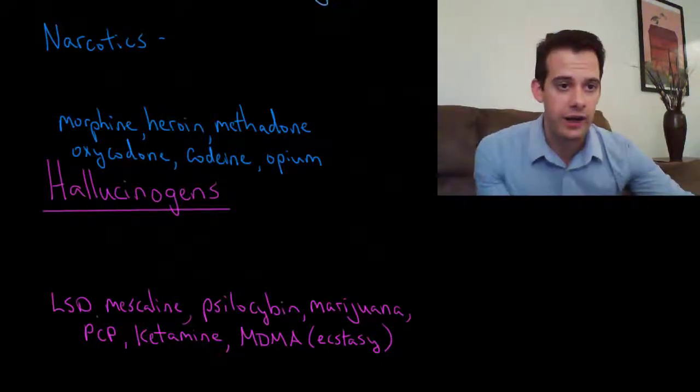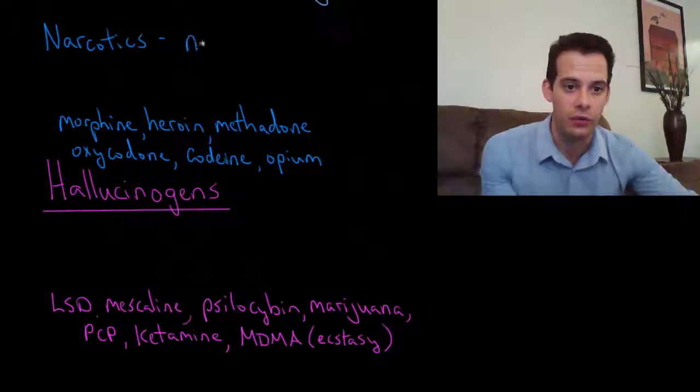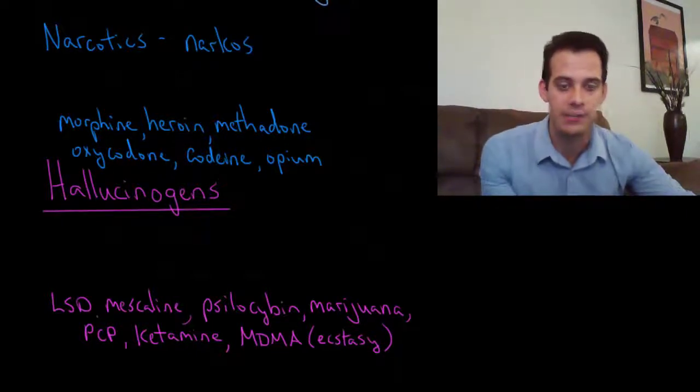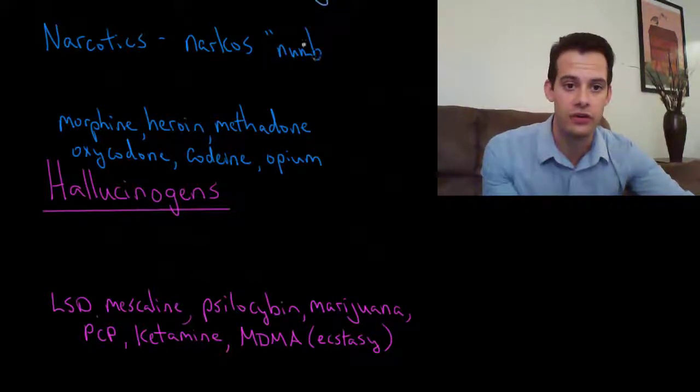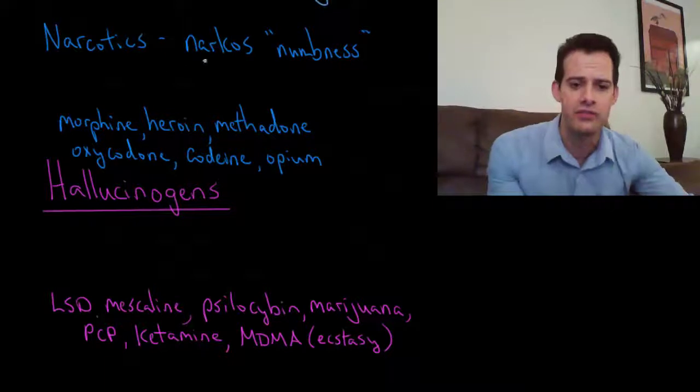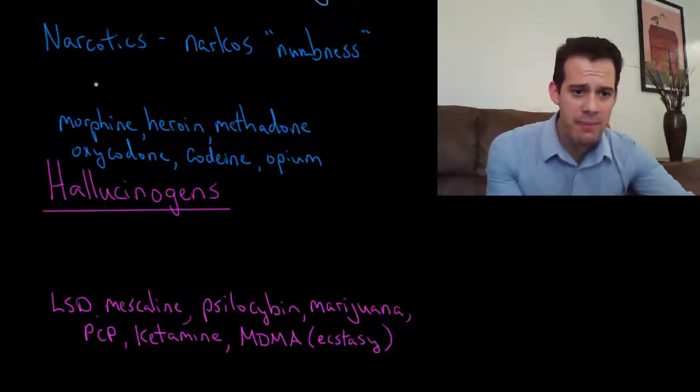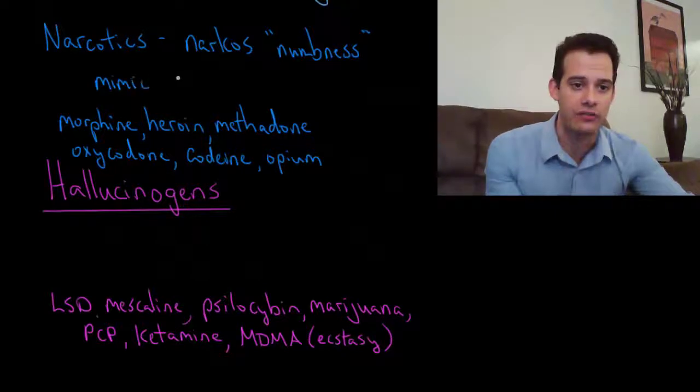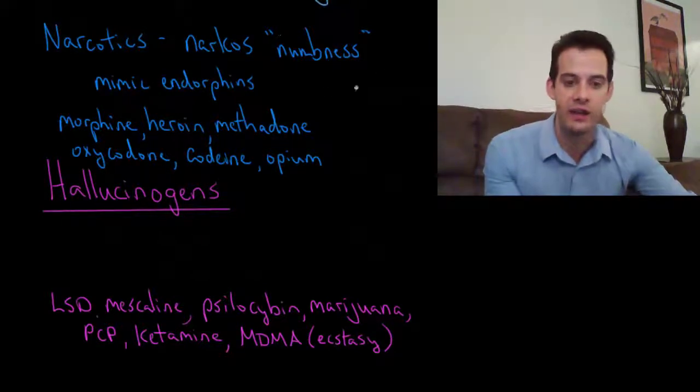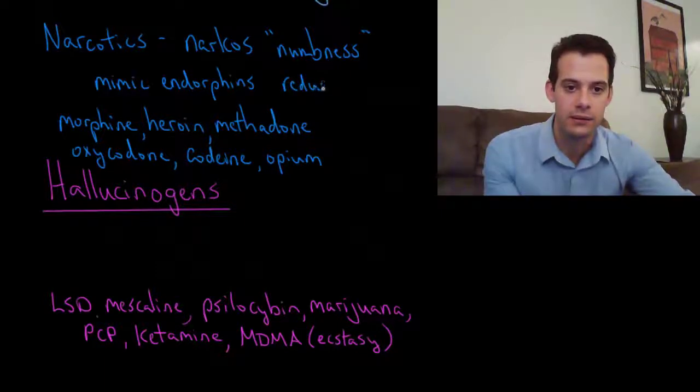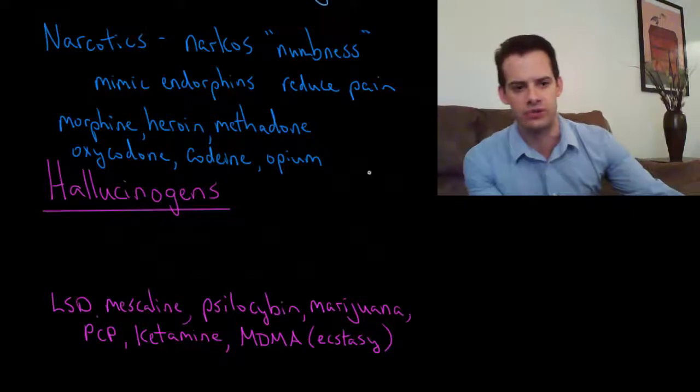What I'm going to do is explain the medical definition. In medical terms, narcotic comes from the Greek narcos, which means numbness or stupor. This refers to a type of drugs which are depressants, but these are a class of depressants that mimic the body's natural painkillers. They mimic endorphins, and so this means that they reduce pain and induce a sort of drowsy bliss in the user.